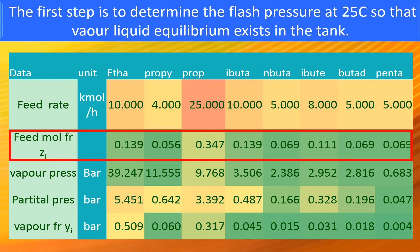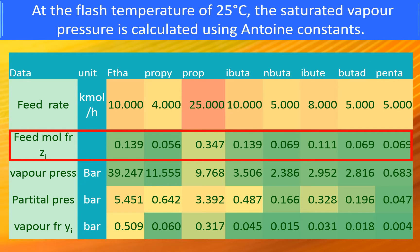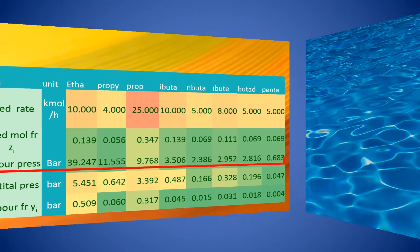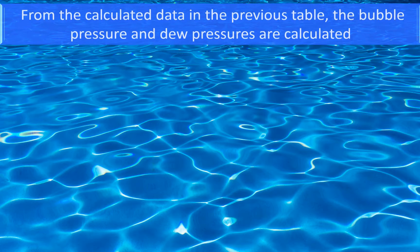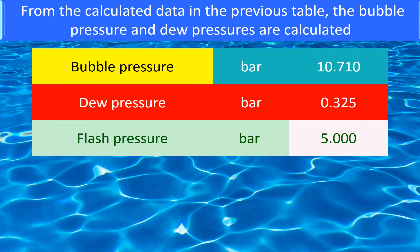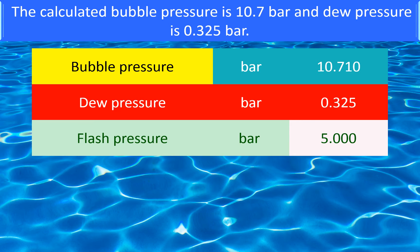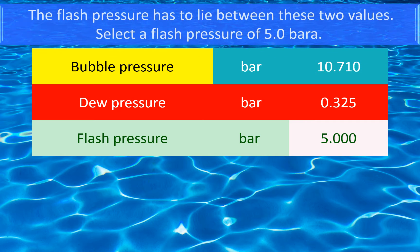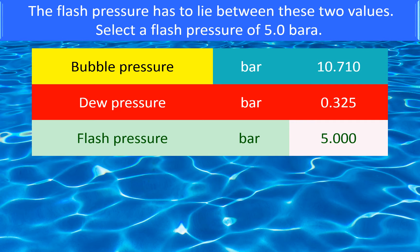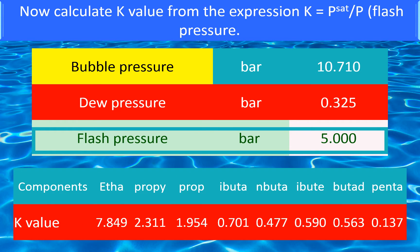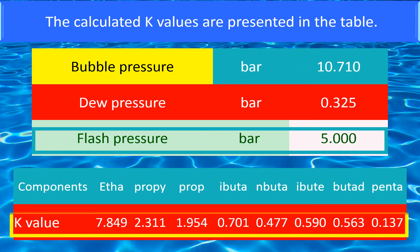The first step is to determine the flash pressure at 25 degrees centigrade so that vapor-liquid equilibrium exists in the tank. At the flash temperature of 25 degrees centigrade, the saturated vapor pressure is calculated using Antoine constants. The values are shown in the table. From the calculated data, the bubble pressure and dew pressure are calculated using the equations presented earlier. The calculated bubble pressure is 10.7 bar and the dew pressure is 0.325 bar. The flash pressure must lie between these two values. Select a flash pressure of 5 bar absolute. Now calculate the K value from the expression K = P_saturated divided by P (the flash pressure). The calculated K values are presented in the table.